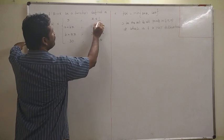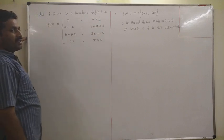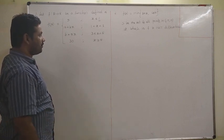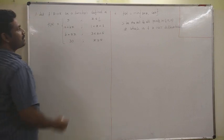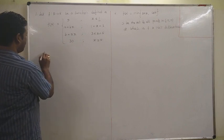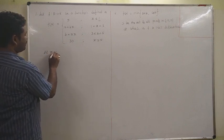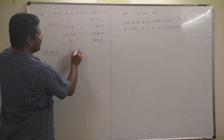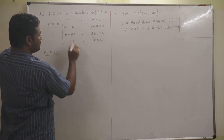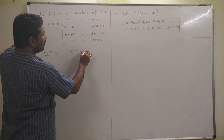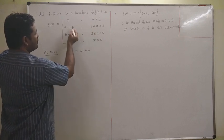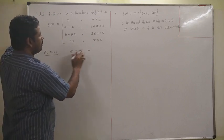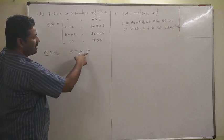At x equal to 1, since f is continuous, the left-hand limit equals the right-hand limit. The LHL is 5 and the RHL is a plus b. At x equal to 1, the function value is also a plus b, giving us the first condition: a plus b equal to 5.